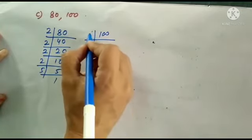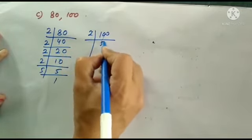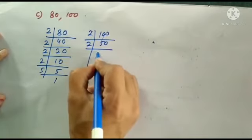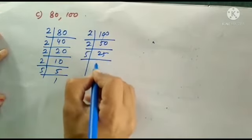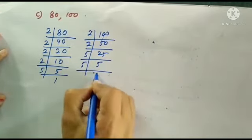Now look at 100. 2's table, 2 times 50. Then 2 times 25 is 50. 5 times 5 is 25. 5 times 1 is 5.